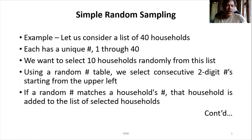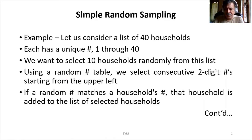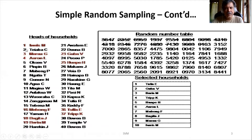Their door numbers are ranging from 1 through 40 — that is 1, 2, 3, 4, up to 40. Suppose we want to select 10 houses out of these 40 houses. We will use what is called a random number table, also called a Tippet's random number table. Here it is — this is the random number table.